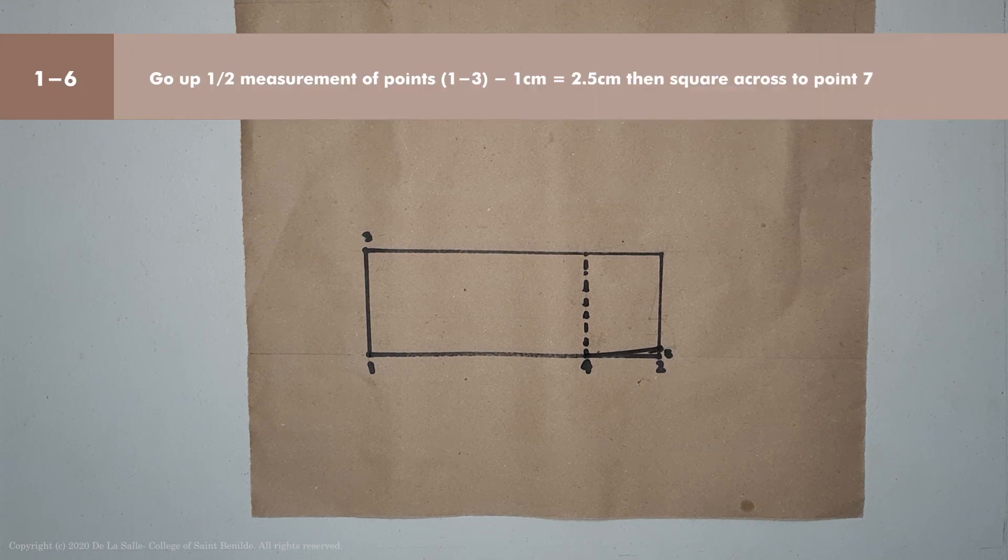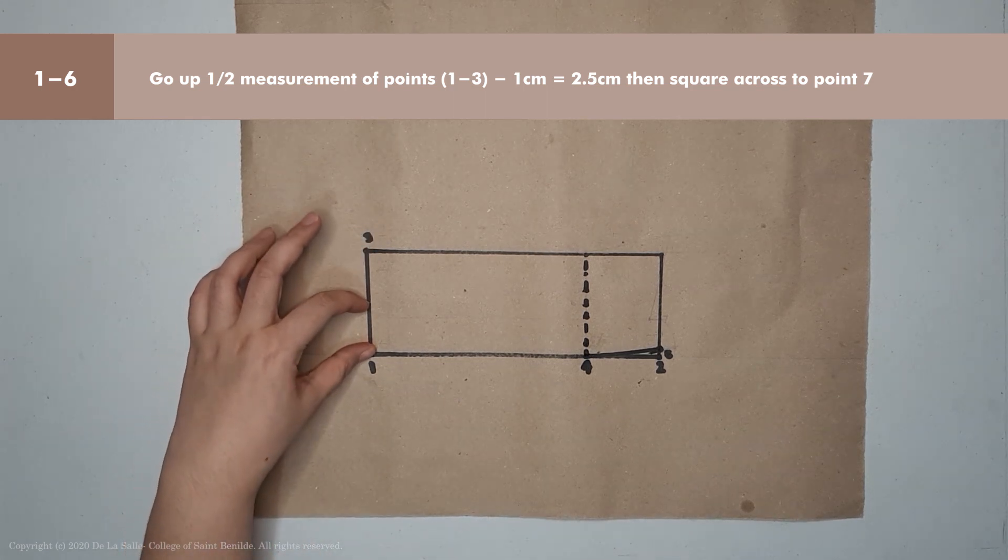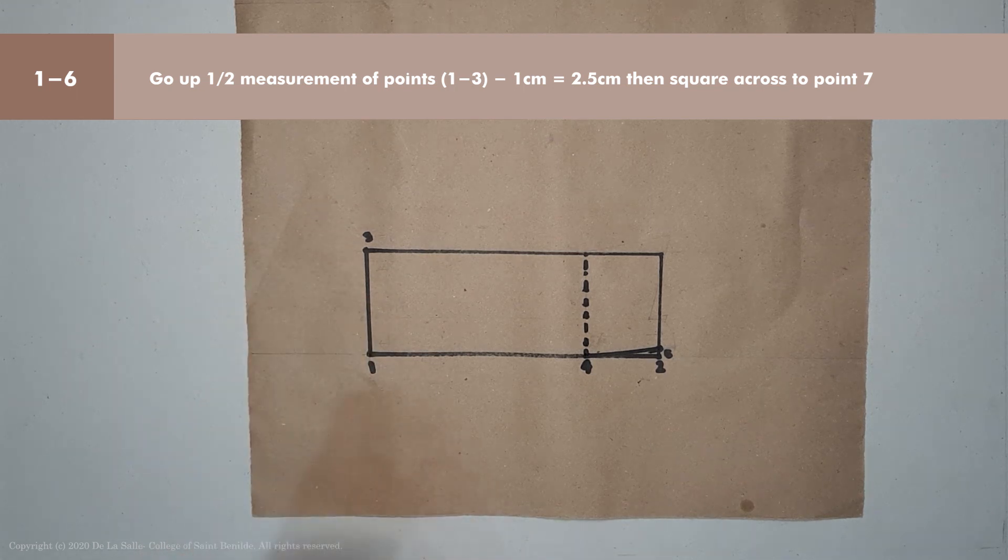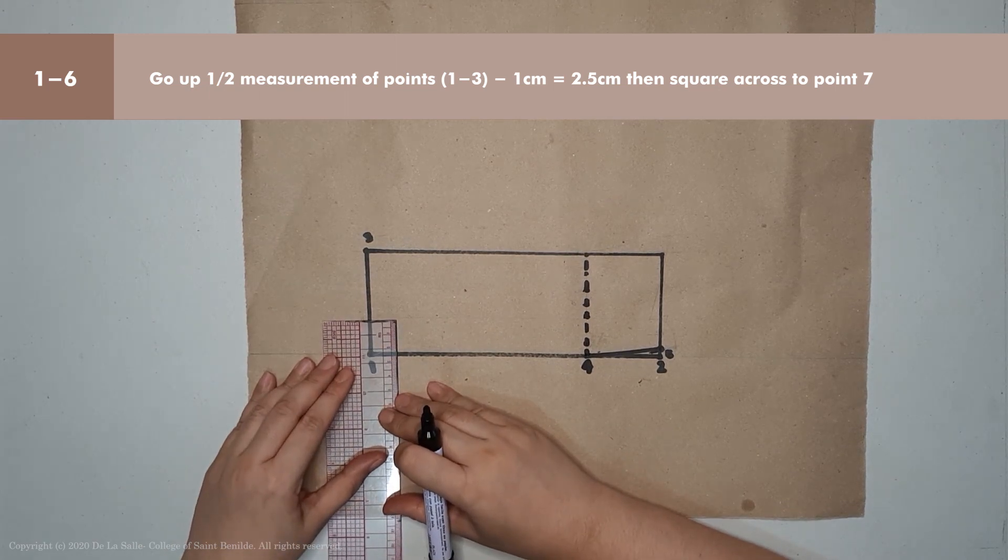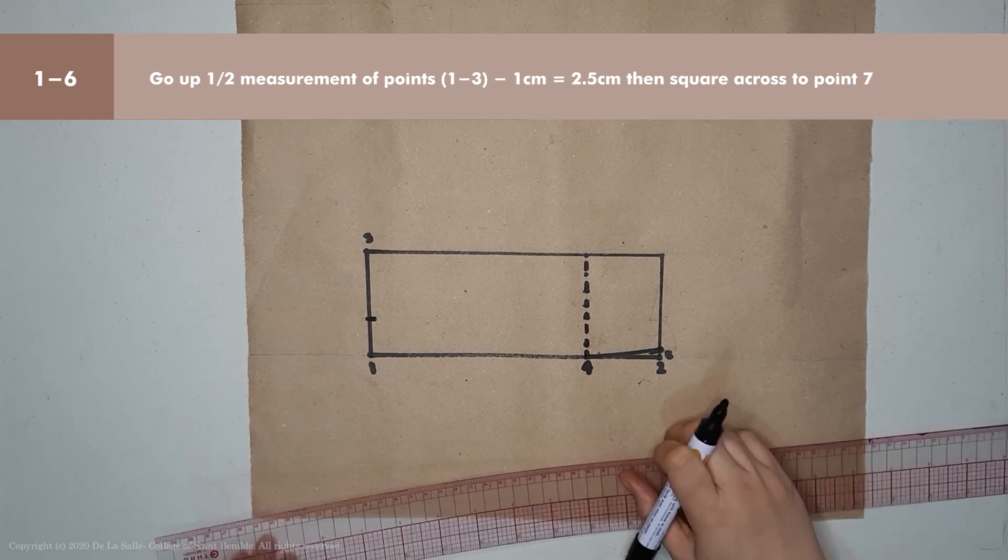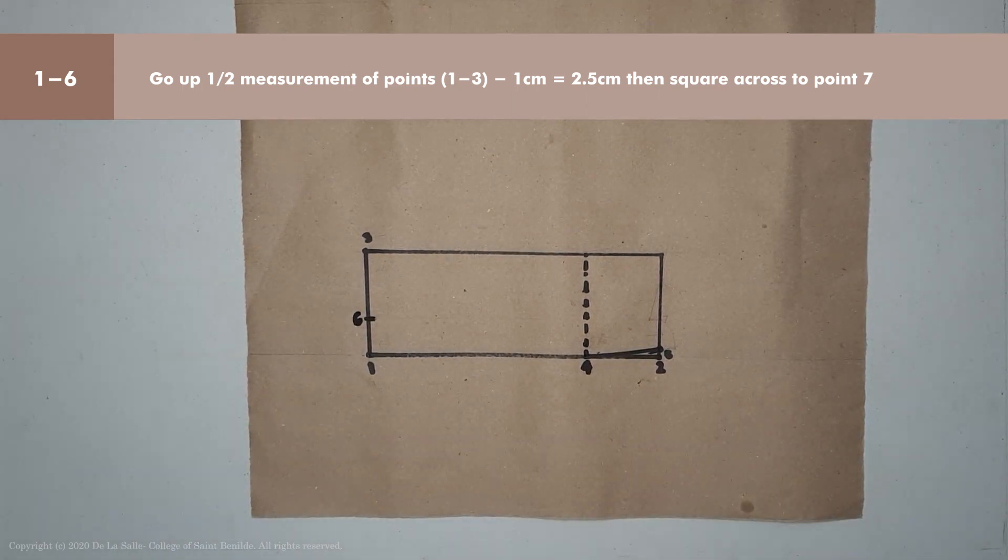Point 0.1 to 6 is going up half of the measurement of points 1 to 3, minus 1 cm. So that's 2.5 cm. Mark it as point 0.6, and then square across.